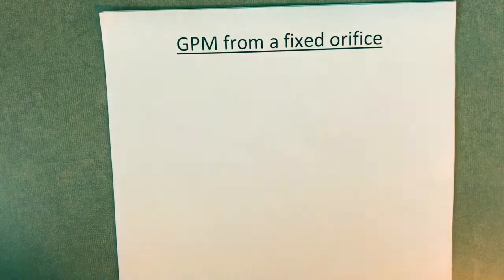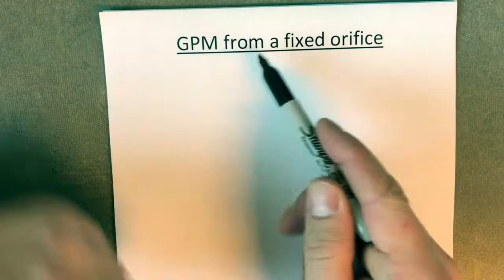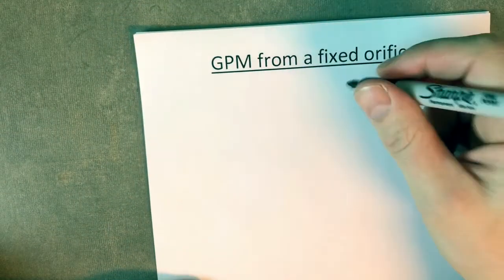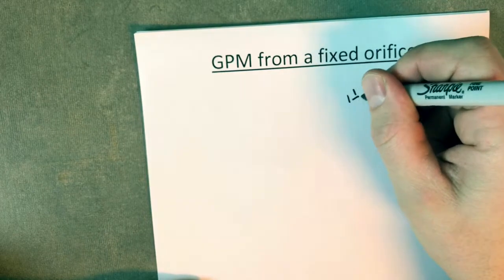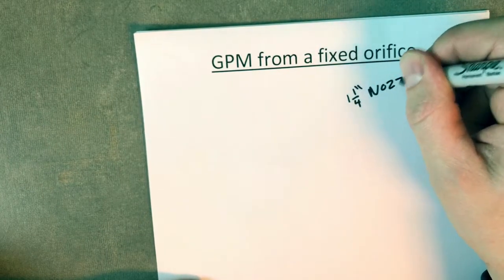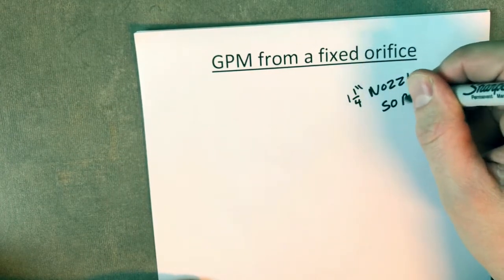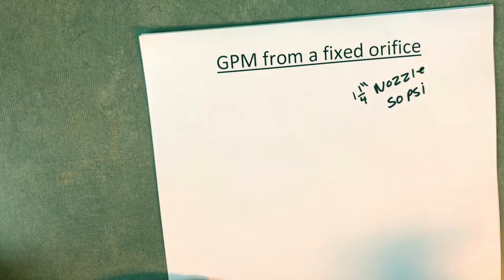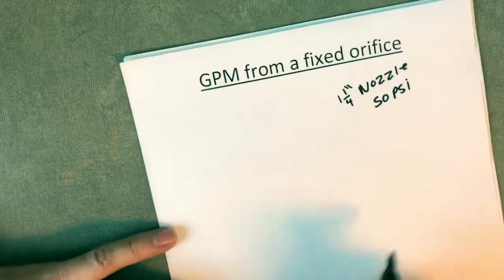I'm going to go over the formula for figuring out GPM from a fixed orifice. So if we have a known sized orifice, say we're using an inch and a quarter nozzle at 50 psi, how can we figure out what the gallons per minute is out of that? Here's the formula.